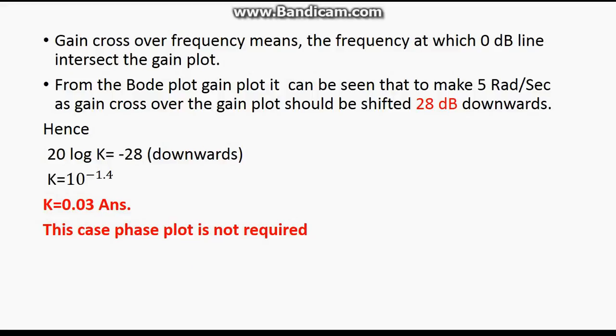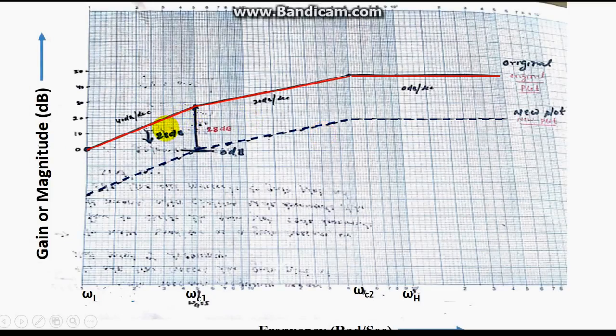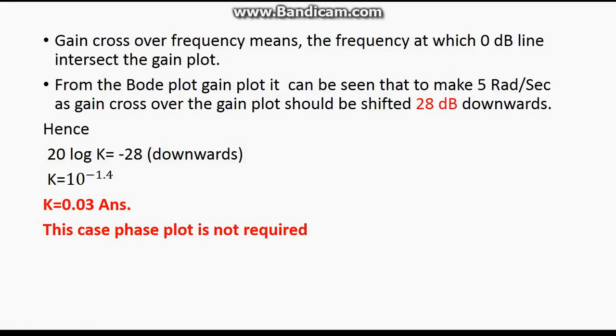I hope you understood that to make the gain crossover frequency 5 rad/s, we shift the graph 28 dB downward, giving K ≈ 0.3. This is the special case where we determine the system gain when the gain crossover frequency is given. Thank you for watching. For any doubts, you can email me at harimohan@gmail.com or refer to my previous Bode plot examples.